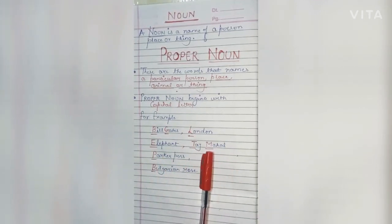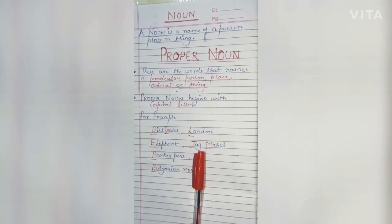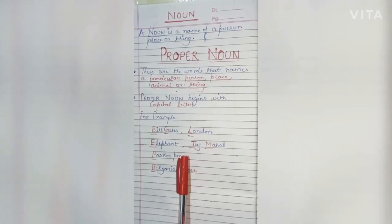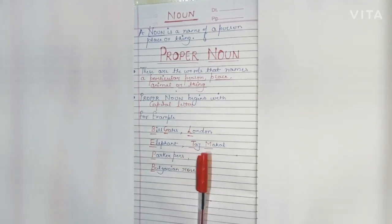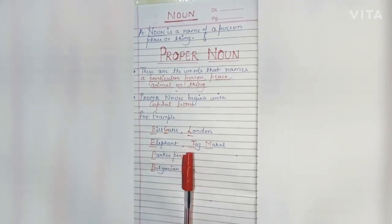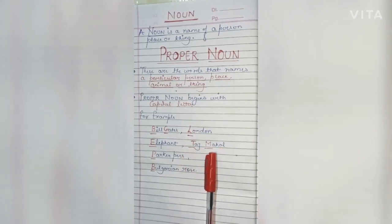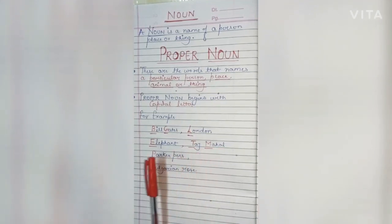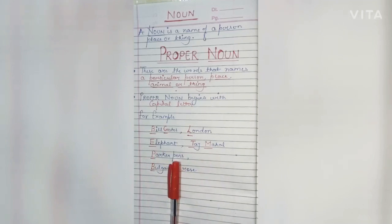Then Taj Mahal. Taj Mahal is a monument located in Agra, India. It is a very famous monument. We are not talking about any other monument, but a specific particular monument — that is Taj Mahal. That is why it is written with capital letters: T in Taj and M in Mahal.